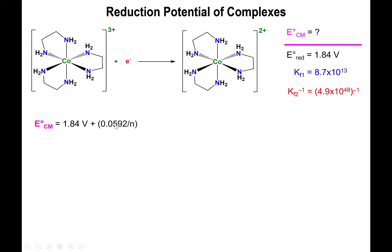So you have 0.0592 divided by n times the log of 8.7×10^13 plus the log of 4.9×10^-48 raised to the negative 1 power, which is the same thing as saying the log of 1 over 4.9×10^-48. So you could actually just bring those things together within one log. You could keep it as separate logs as well, if you please. That's totally up to you.